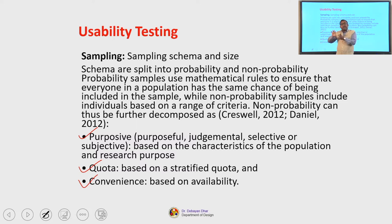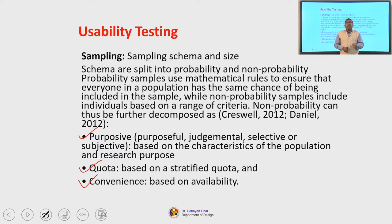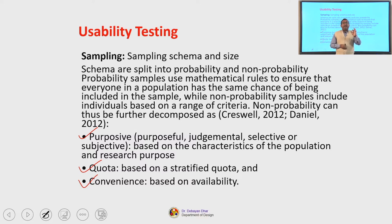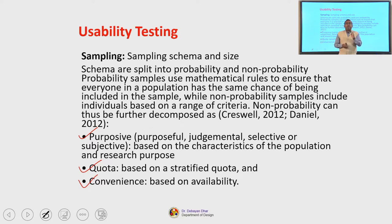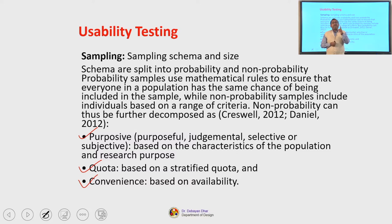There is also non-probability sampling, called non-probability sampling, with types: purposive, quota, and convenience. In purposive non-probability sampling, you purposefully with your own judgment select the subject — these are based on characteristics of the population and research purpose. For example, if we are conducting a study on people who have partial blindness and want to test how interfaces work with them, we have to purposefully select people who are partially blind. That is an example of purposive sampling.